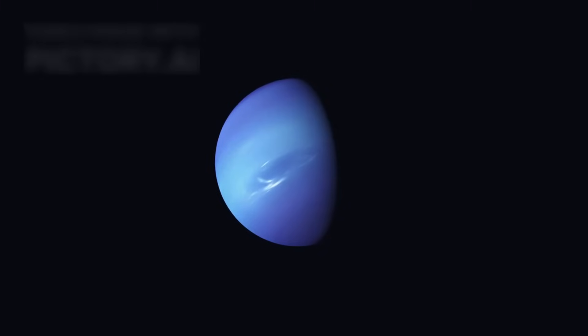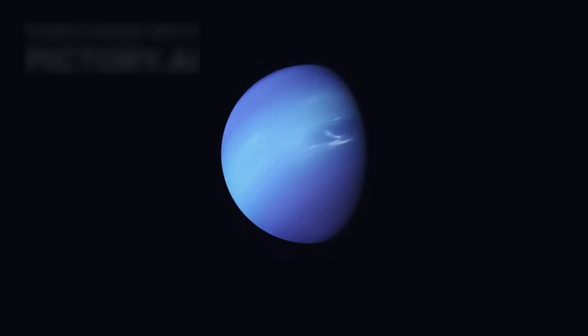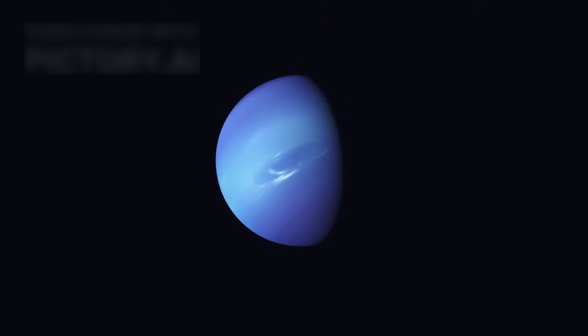At Neptune, it confirmed the presence of dark spots, giant storms swirling in the atmosphere, and discovered six new moons plus delicate rings circling the icy planet.